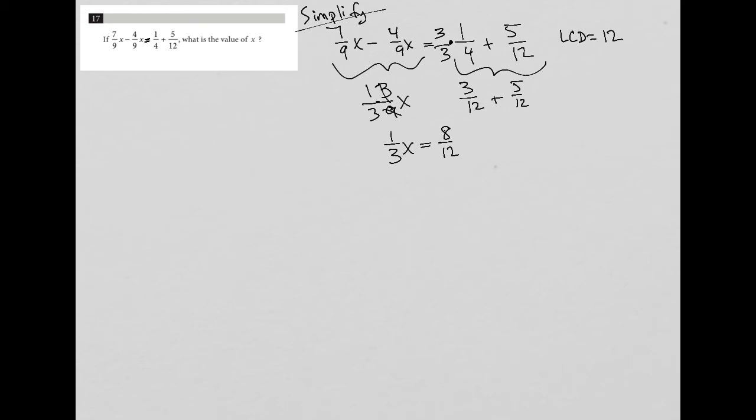So last step is I want to get x by itself, so I'm going to multiply by the reciprocal of 1/3 on both sides. In doing that, my 3s and 1s cross out, leaving me with just x, which is what I want to find.